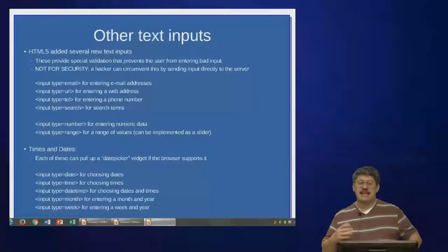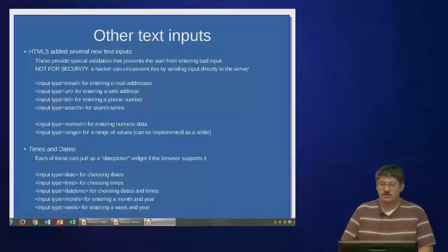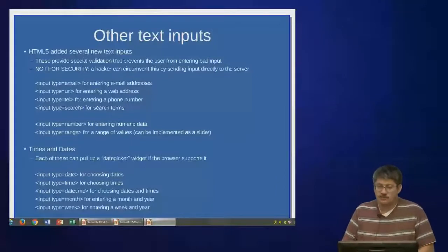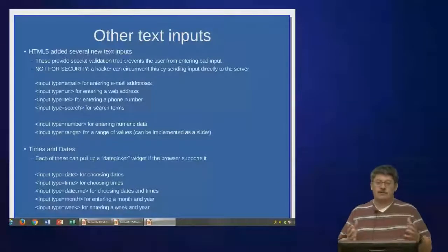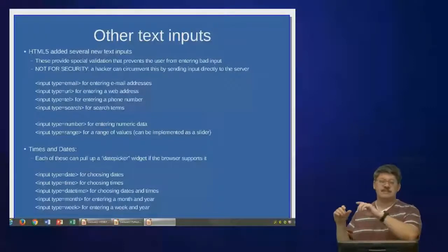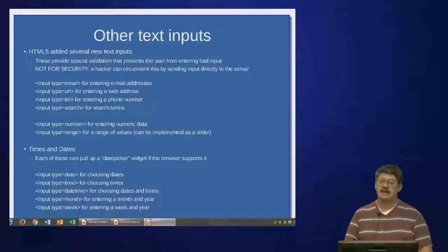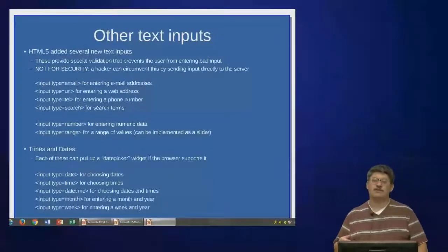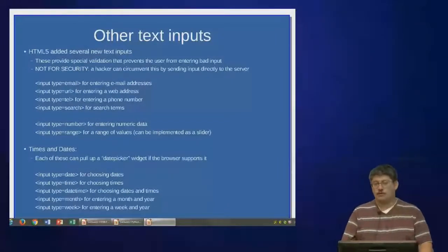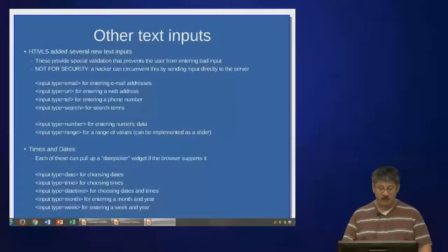There's also a date picker widget. Chrome supports this well; Firefox has rough support; Internet Explorer doesn't support it yet. If you say input type equals date, it brings up a calendar widget where you can select a month, year, and day, which gets put in as a string into the text field. There's a similar widget for selecting times, and you can also do datetime, month of the year, or week of the year.